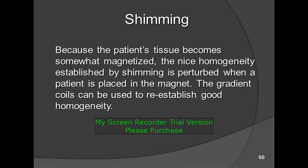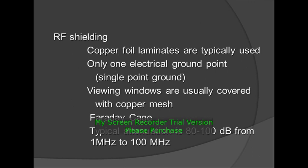Because the patient tissues become somewhat magnetized, the good homogeneity established by shimming is perturbed. When a patient is placed in the magnet, the gradient coils can be used to re-establish good homogeneity. RF shielding: copper foil laminates are typically used with only one electrical ground point — a single point ground. Viewing windows are usually covered with copper mesh. Faraday cage: typical attenuation of a Faraday cage is 80 to 100 dB from 1 MHz to 100 MHz.